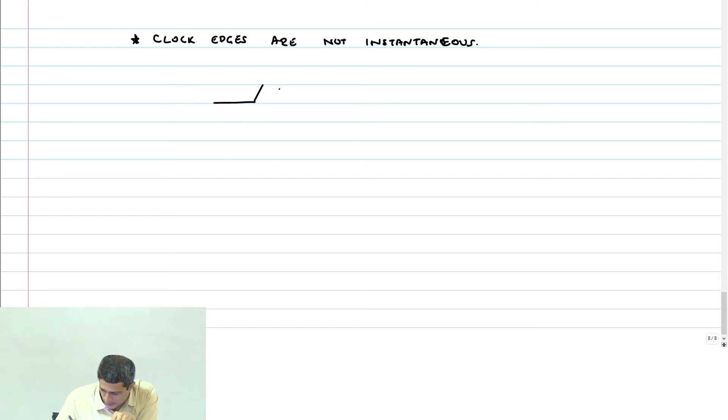So my clock edges are going to look like this. And my data, let's say this is a positive edge flop. Data is now going to change like this, d1 to d2 and any further change should get ignored until the next d3, d4.